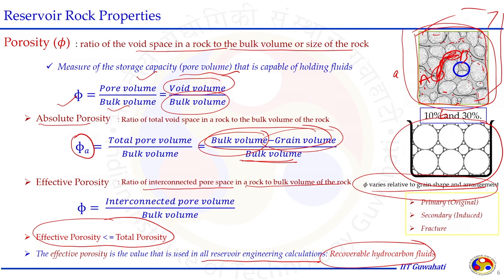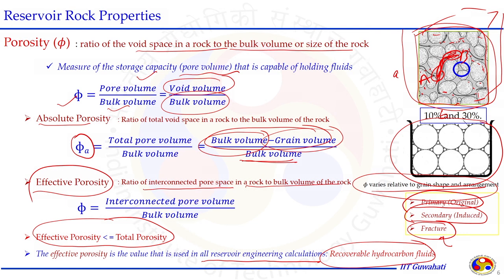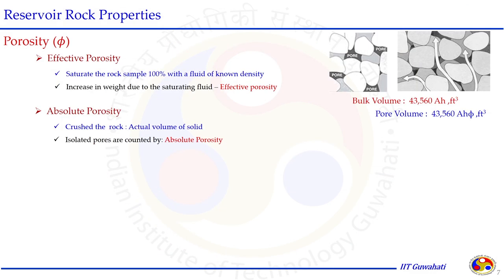Porosity can be defined further into three categories: primary porosity — the actual porosity at the time of deposition; secondary or induced porosity — when disturbances occur in the deposition by natural processes, migration, or other physical processes including fractures. In general, what we use is effective porosity: taking out core samples, measuring in the laboratory, performing experiments on a large number of samples, and taking the average to calculate effective porosity.